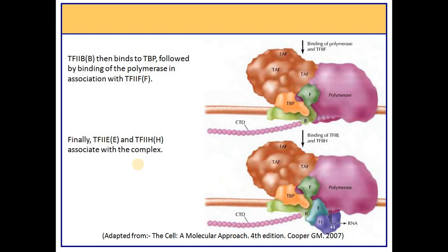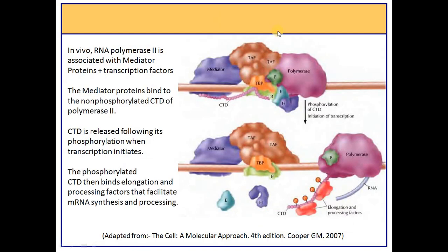To summarize in vitro initiation: the order of recruitment is TF2D first, followed by TF2B, then RNA polymerase 2 with TF2F, and then TF2E and TF2H. However, under in vivo conditions, several additional transcription factors are required for transcription initiation.